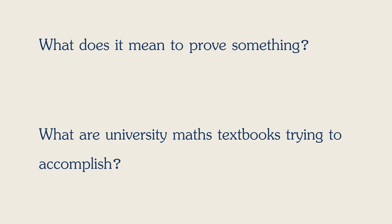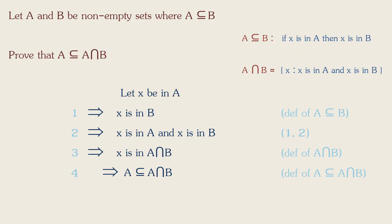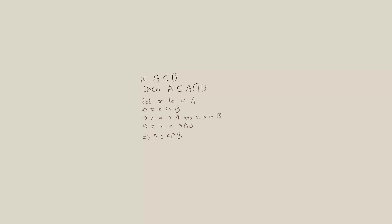So let's answer the questions we began this video with. What does it mean to prove something? And what exactly are university textbooks trying to accomplish? Hopefully you have a pretty good understanding of the answer to the first question at this point. What it means to prove something is to show that thing logically follows from definitions and axioms that you can clarify before the proof.